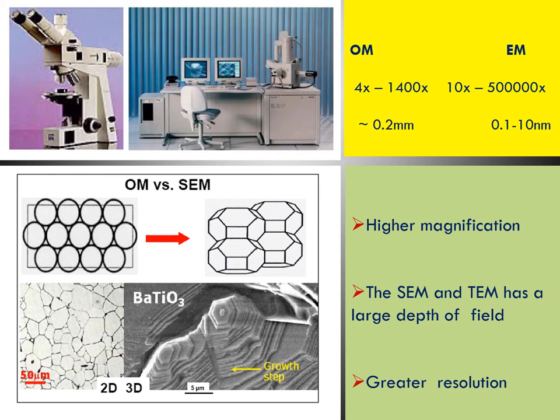Magnification means an object's size will be multiplied many times — that is called magnification. An optical microscope can magnify up to 1400 times the original size, but an electron microscope can go up to 500,000 times. So electron microscopes have higher magnification than optical microscopes. Also, SEM resolution is 0.1 to 10 nanometers, so SEM has a large depth of field, greater resolution, and higher magnification, making it very important to study nanoscale objects.